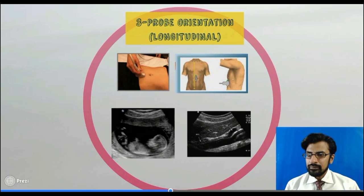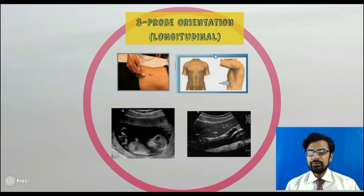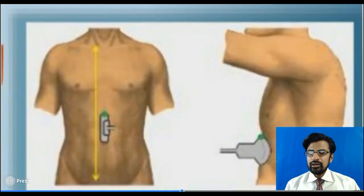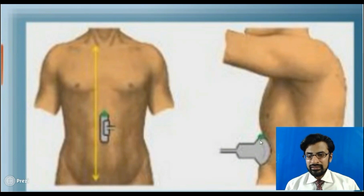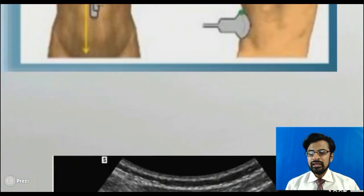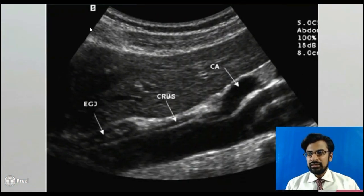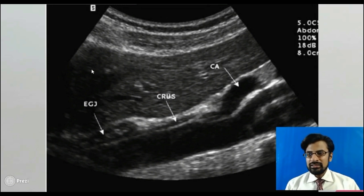In the third step, you will learn the probe orientation in the longitudinal plane. It means when the probe is placed in such a way that its one end is directed superiorly and its other end is directed inferiorly — then which structure appears on the right half of the screen, which end of the probe is represented on the left side of the screen, what appears in the upper part, and what appears in the lower part of the screen.